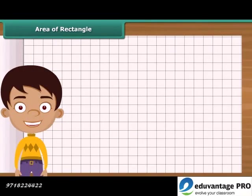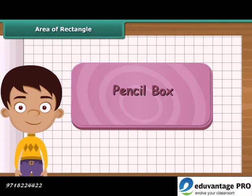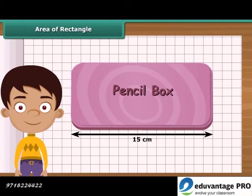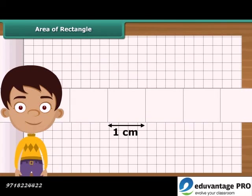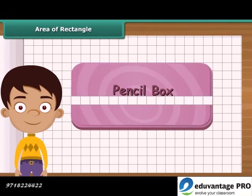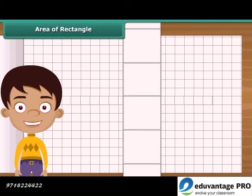Let us find the area of a rectangle by counting squares. Take a rectangular pencil box and place it on a squared paper. The length of the box is 15 centimeters. Arrange 15 squares of side 1 centimeter along its length. The breadth of the box is 8 centimeters. Arrange 8 squares of side 1 centimeter along its breadth.